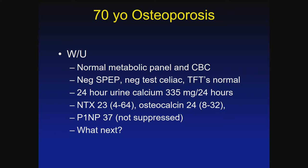Someone has been on therapy and is no longer doing well — really important to think about working her up again. She gets a metabolic panel: normal serum protein electrophoresis, normal celiac test, normal thyroid. Her 24-hour urinary calcium is high — usually around 200 is the cutoff, so this is a little high. Her bone turnover markers: NTX is okay, osteocalcin is okay. The P1NP of 37 is not suppressed — P1NP is a marker of bone formation and should be suppressed on a bisphosphonate, but it's not.